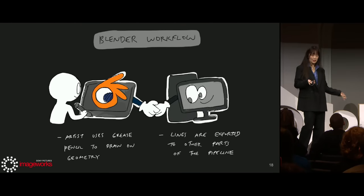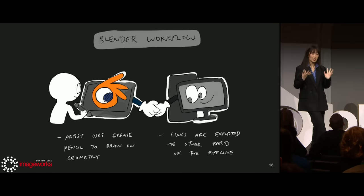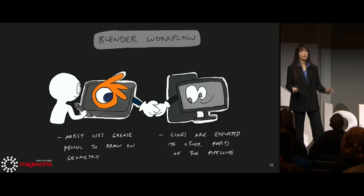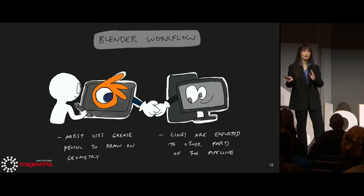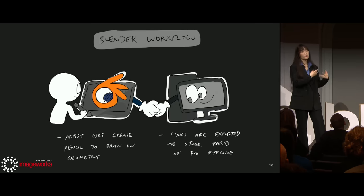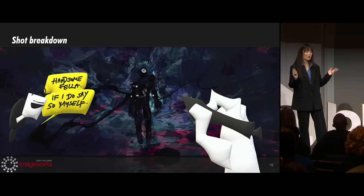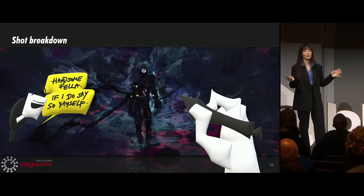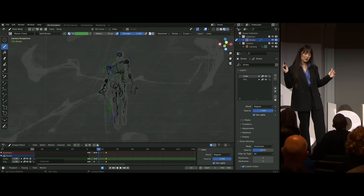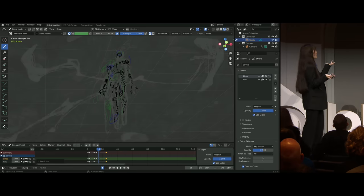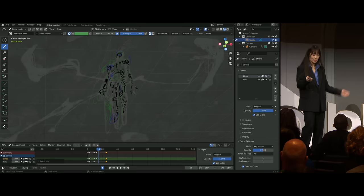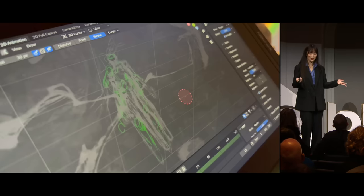Both these characters have a lot of hand-drawn design elements that are difficult to capture with our existing 3D tools — and that is where Blender came in handy. As previously mentioned, we would use Blender for shots that needed a more human touch. Artists would use Grease Pencil to draw directly onto the model and then ship the work off to the rest of the pipeline. To give a better idea of what that looks like, I'm going to do a shot breakdown.